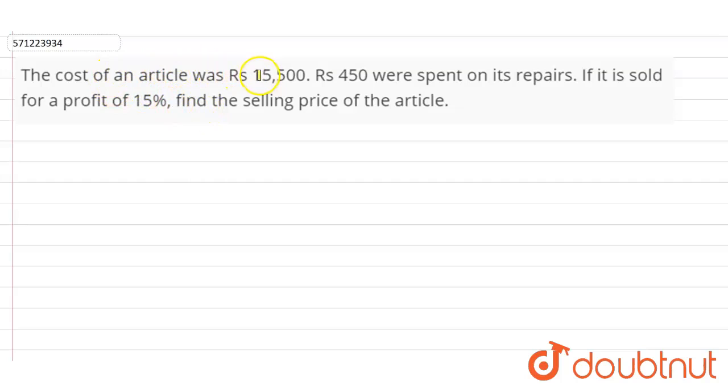the cost of an article was Rs. 15,500. Rs. 450 were spent on its repairs. If it is sold for a profit of 15%, find the selling price of the article.